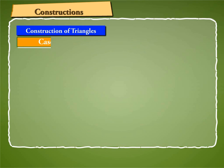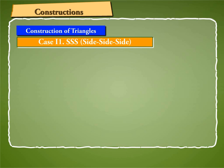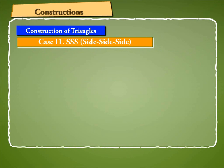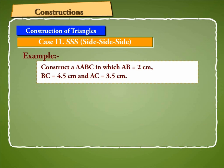Case 2: SSS Side-Side-Side Triangle Construction. To construct a triangle when its three sides are given. Let us understand this by taking an example. Let us construct a triangle ABC in which AB is equal to 2 cm, BC is equal to 4.5 cm, and AC is equal to 3.5 cm.